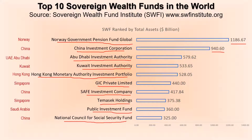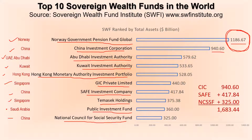Looking at the countries of origin of these SWFs: Norway, China, UAE (Abu Dhabi), Kuwait, Hong Kong, Singapore, China, Singapore, Saudi Arabia, and China. Although at the top we have Norway's SWF with 1.1 trillion dollars in assets, in the top 10 we have three SWFs from China — CIC, SAFE, and NCSSF — and together these three have assets worth 1.6 trillion dollars, which is more than the top SWF of Norway.